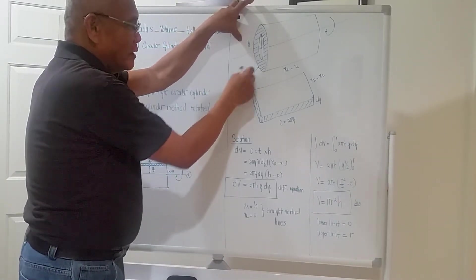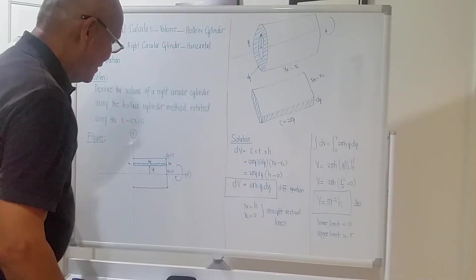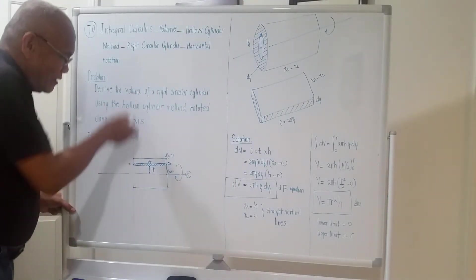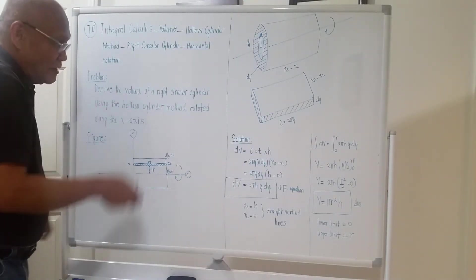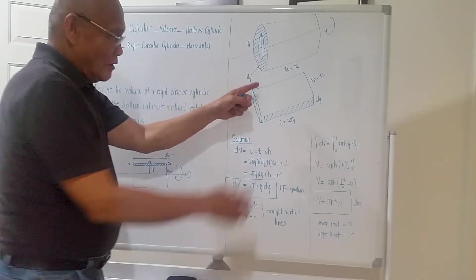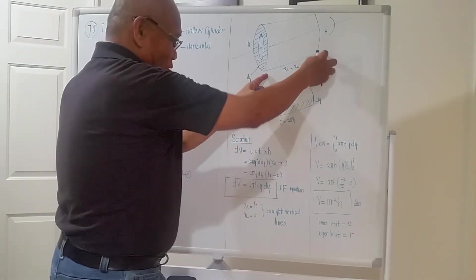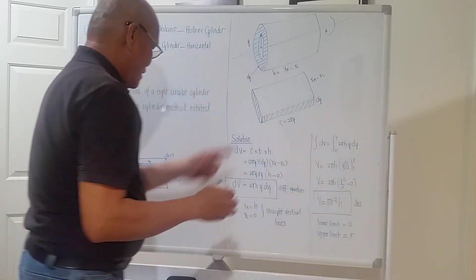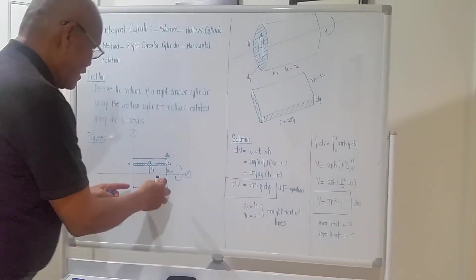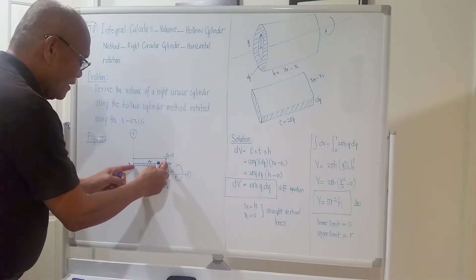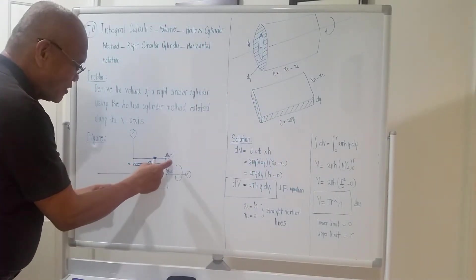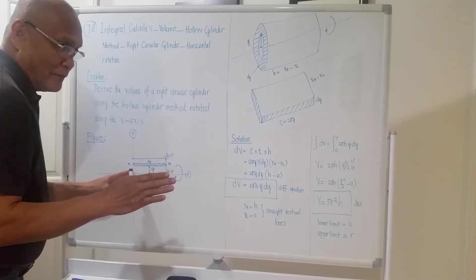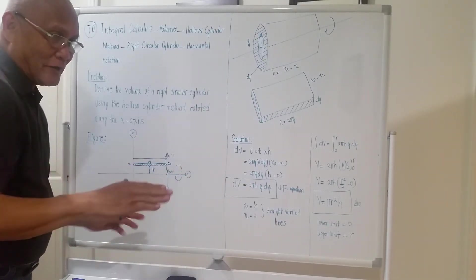The thickness of the slice when rotated is dy — it is along the vertical line, so it is dy. This length here is actually the height of the cylinder, which is xr minus xl. It depends if they are constants or variables.